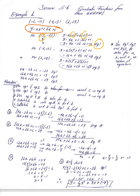You do the same thing for the next point. For point (4, 13), you substitute x equals 4 and y equals 13 into the general equation. Since 4 squared is 16, you get 16a plus 4b plus c equals 13. This is equation number two.